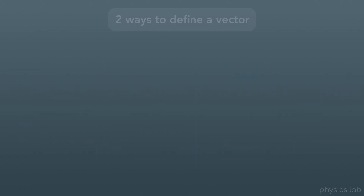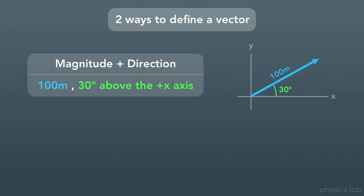So there are two ways to define a vector. The first way, like we mentioned before, is by using the magnitude and the direction. Here we have this blue vector with a magnitude, or length, of 100 meters, and a direction of 30 degrees above the positive x-axis. This combination of magnitude and direction completely describes this specific vector. No other vector could have the same magnitude and direction.